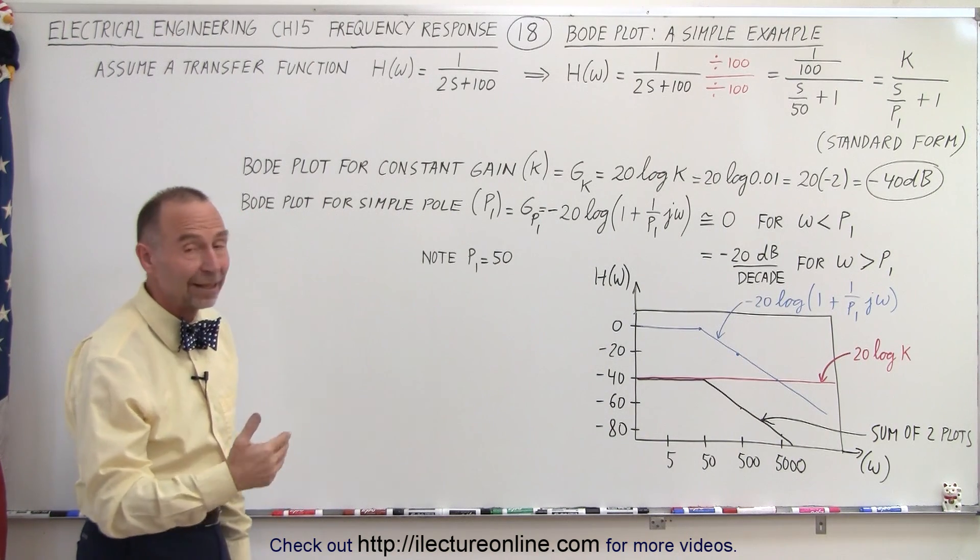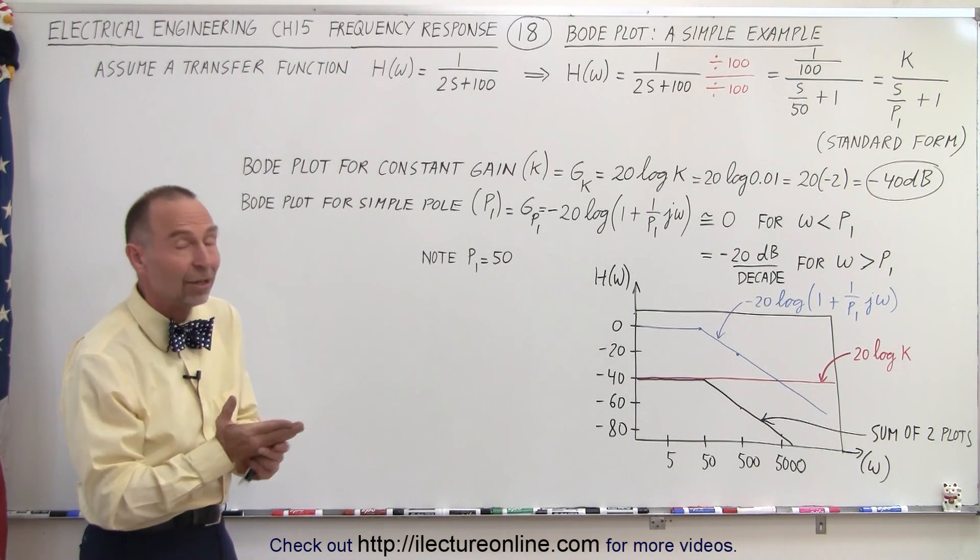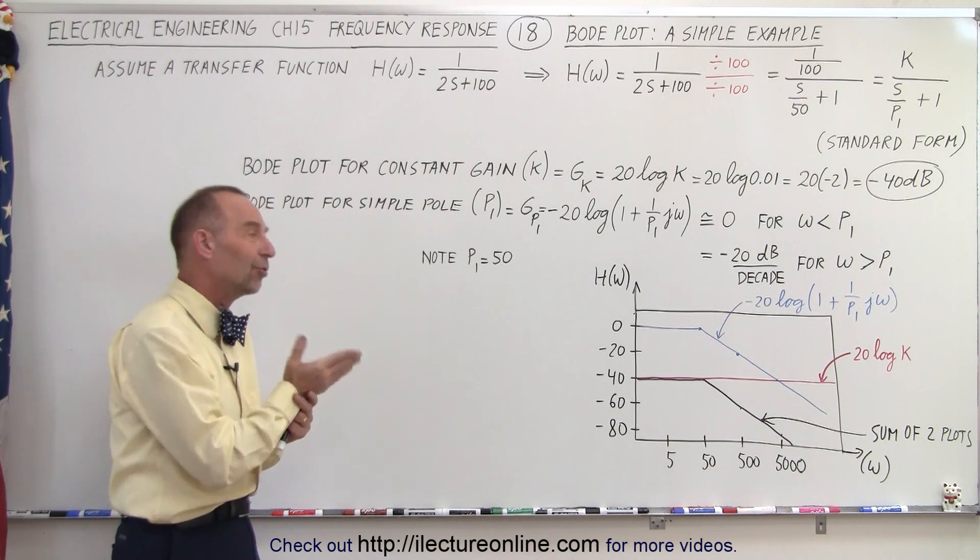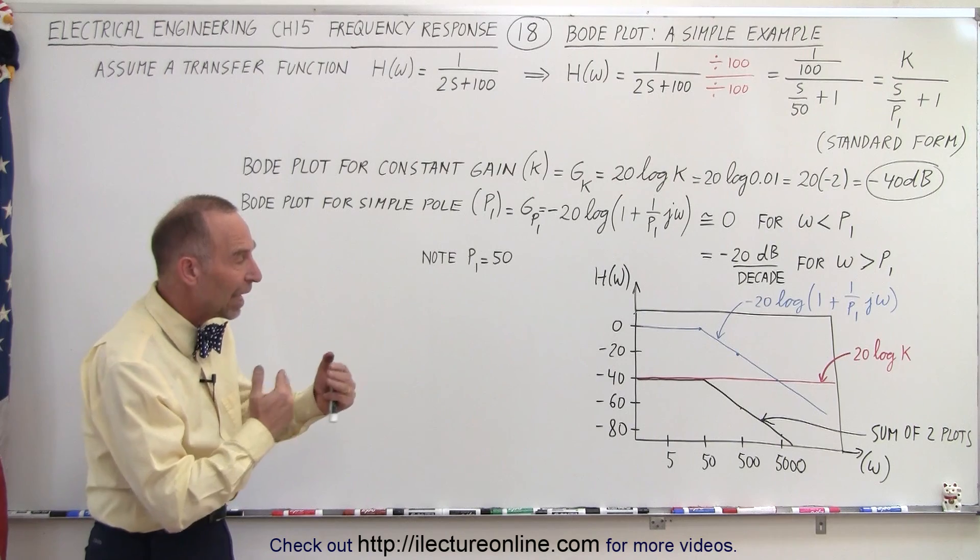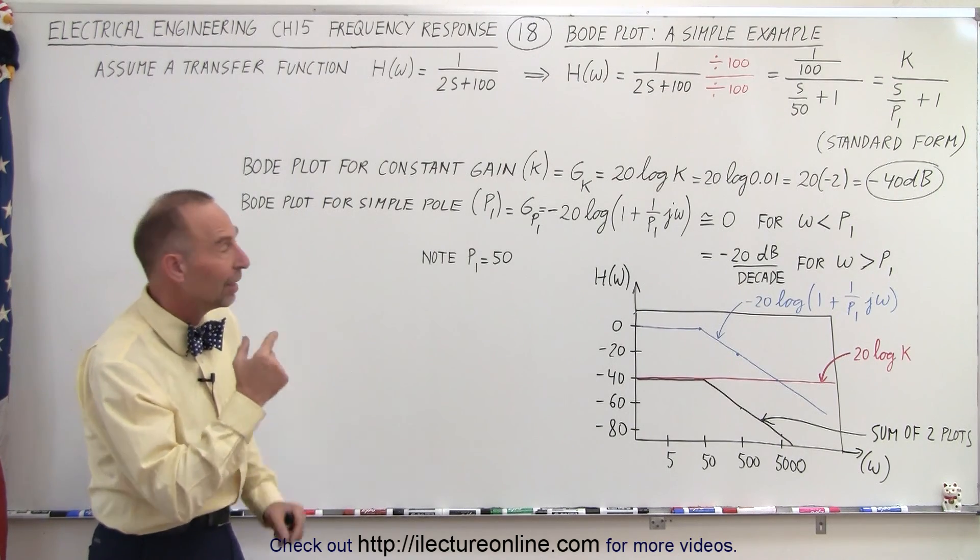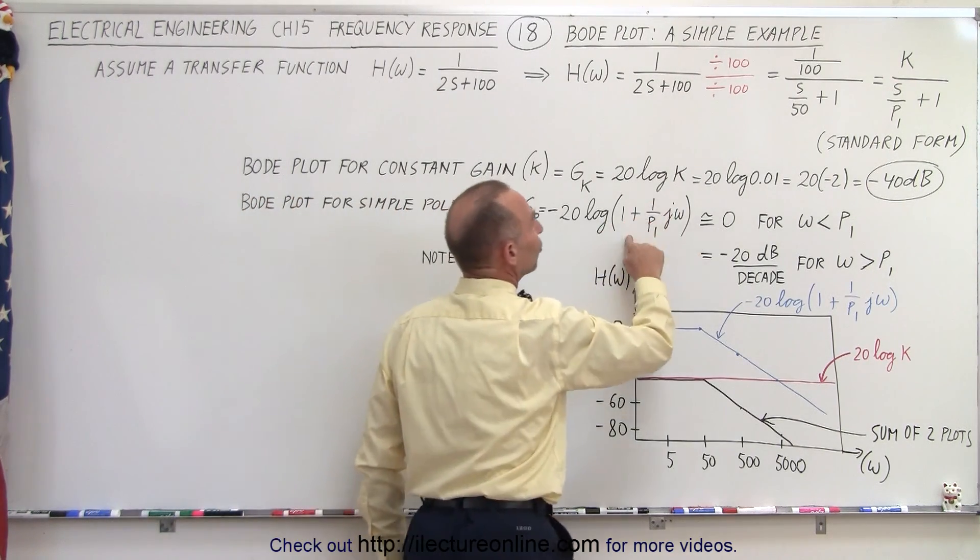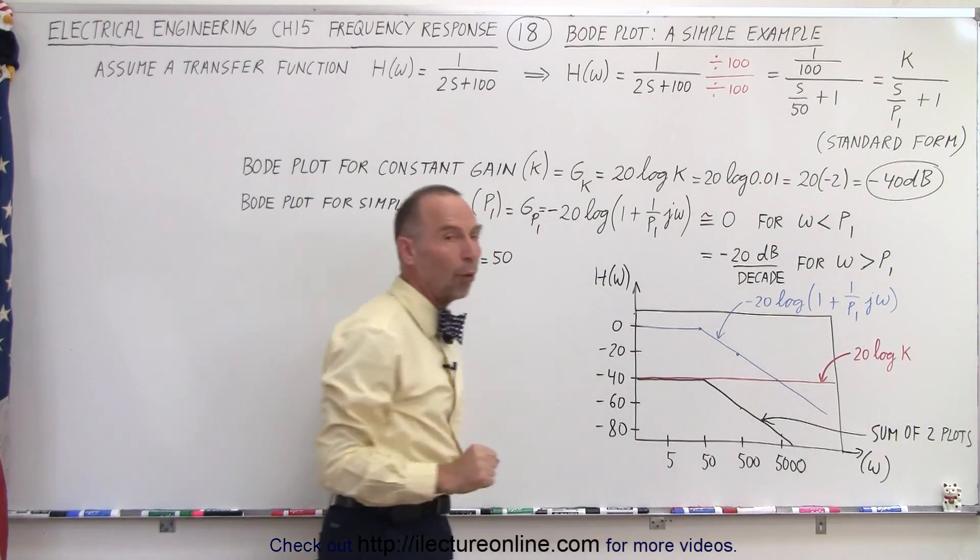You'll begin to see that Bode plots are actually really easy where we either have a plus 20 dB for zeros or a minus 20 dB for poles and where that starts depends upon the value of this function in the standard form.